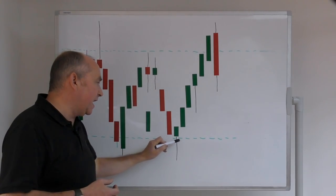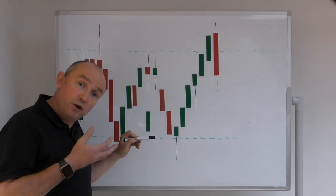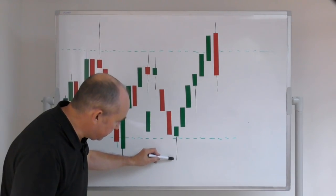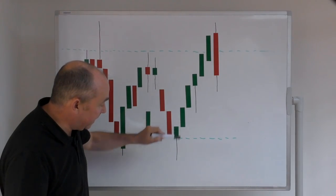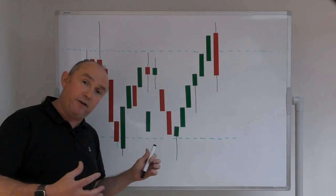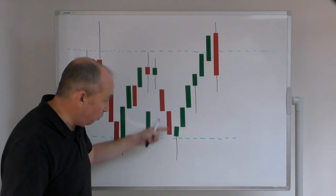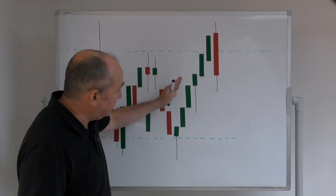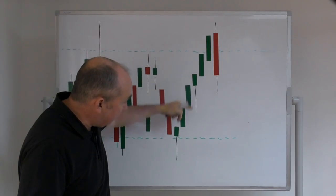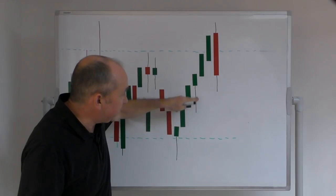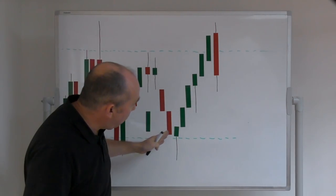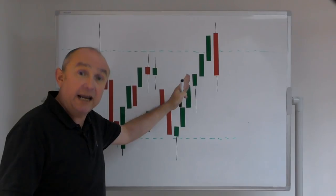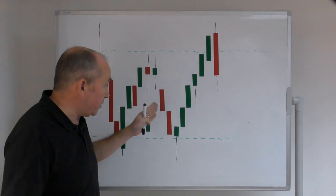Now we come back into this level of support. Trades through the level of support — looks as though the bears are in control — but then a wave of buying comes back in and pushes price back up for a bullish hammer. The main body of the candle is in the top third of the whole range — that's a bullish hammer at a level of support. This hammer candle is against the trend, while this one is with the trend. So these hammer and inverted hammer candles can work in both directions — with and counter-trend.